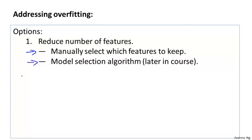Later in this class we'll also talk about model selection algorithms, which are algorithms for automatically deciding which features to keep and which features to throw out. This idea of reducing the number of features can work well and can reduce overfitting, and when we talk about model selection we'll go into this in much greater depth. But the disadvantage is that by throwing away some of the features, we're also throwing away some of the information you have about the problem. For example, maybe all of those features are actually useful for predicting the price of a house, so maybe we don't actually want to throw some of our information or throw some of our features away.